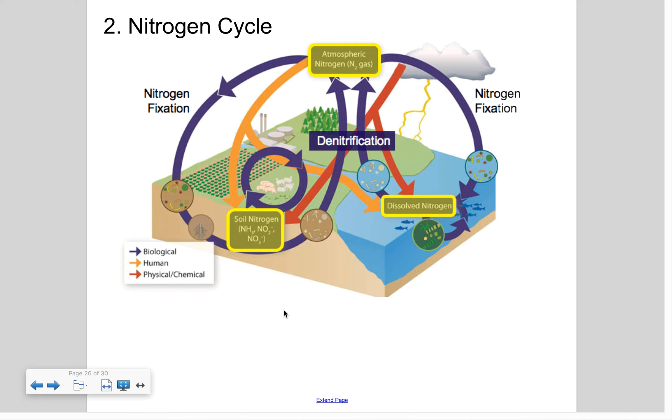So the nitrogen cycle is actually a very important cycle because nitrogen is needed to make amino acids. If you remember what amino acids make up, if you get a bunch of amino acids linked together, you've created a protein. Not only that, nitrogen is found in DNA as well as RNA, so nucleic acids.